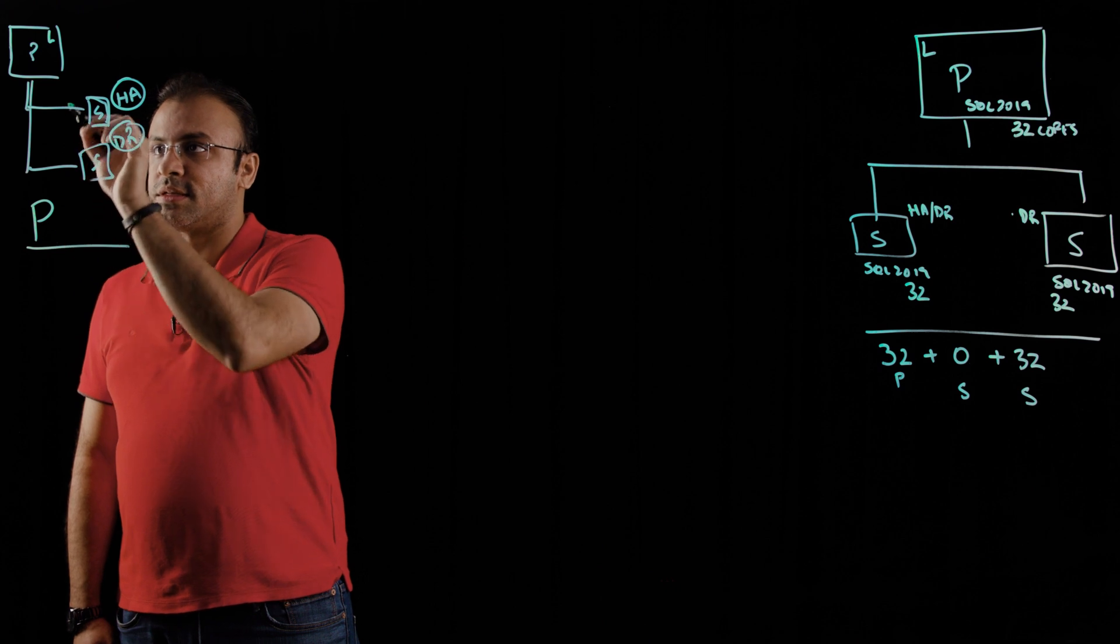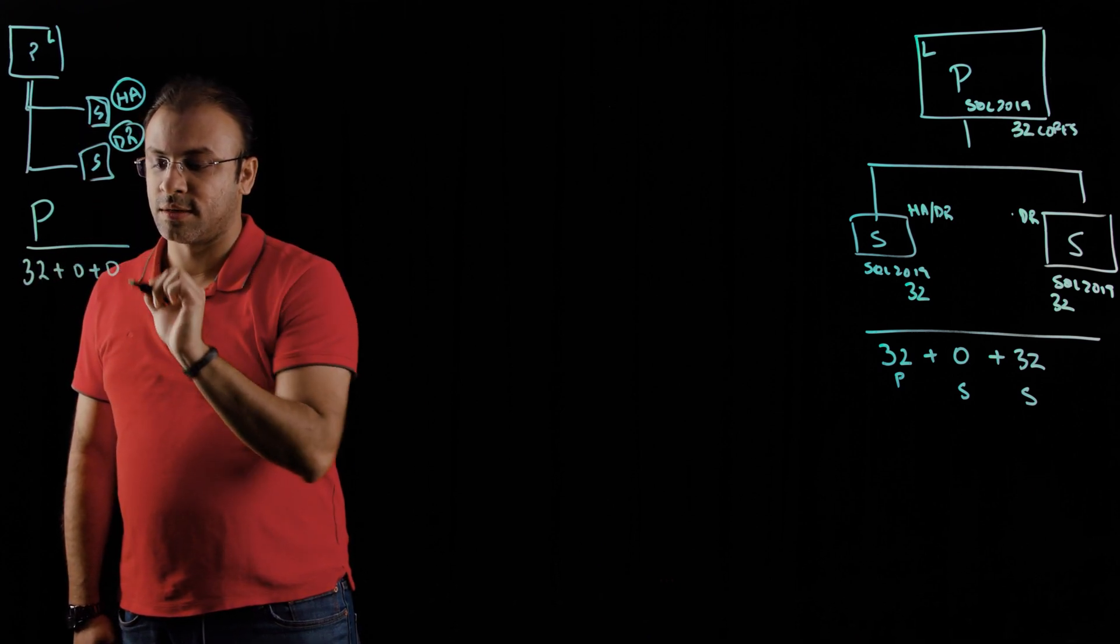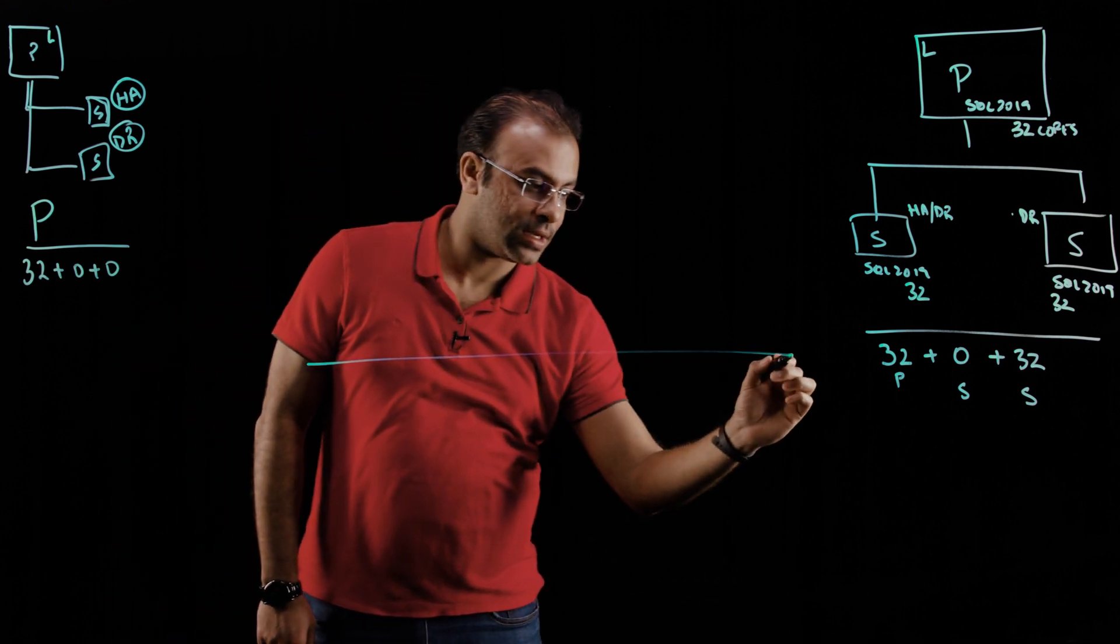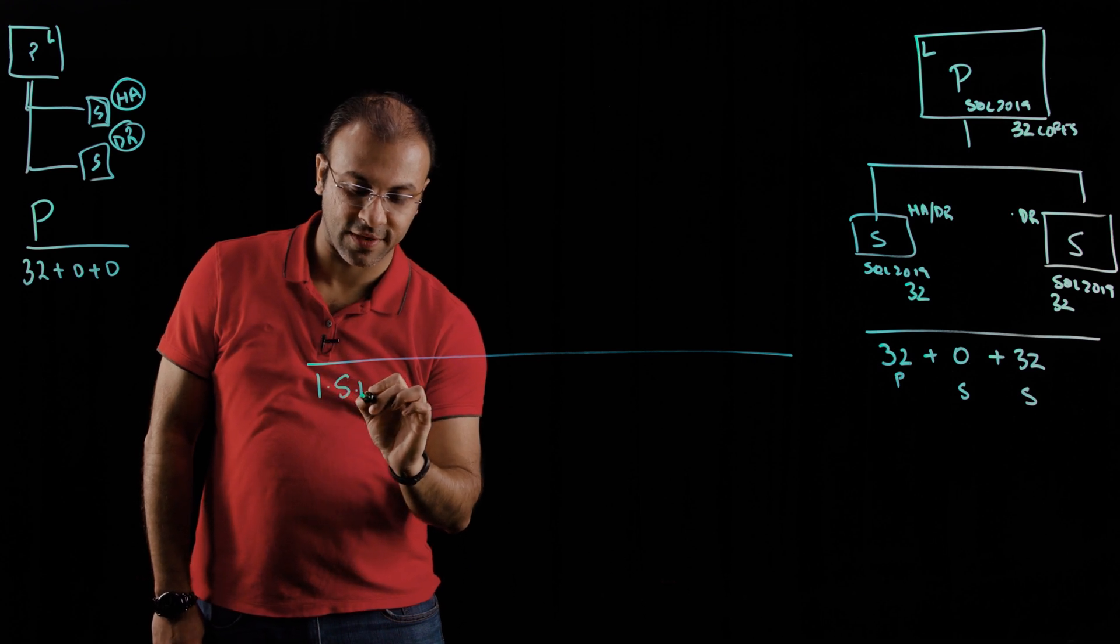Now, what that actually means is, let's assume you have 32 cores, your licensing would look like this. Now, how do I actually set this up? The first prerequisite, you need to have software assurance. Second prerequisite...